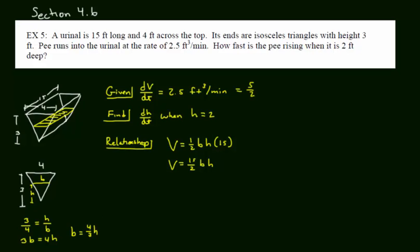We're going to use that when we update our relationship. So our volume equals 15/2 times the base, which is 4/3 h, times the height, which is h. I'm going to star this because I want to simplify. The 15 and the 3 goes to 5, the 4 over 2 goes to 2. So that's going to be 10h². Easy enough.